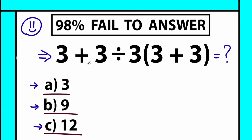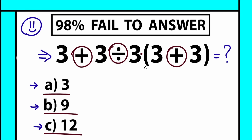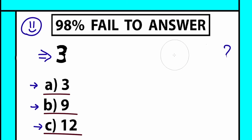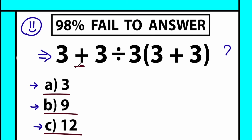Let's look closely at our question. We have all threes — we have addition, we have division, we have multiplication, and we have parentheses. What makes all the difference in the world is the order we do this problem. Do we do addition first? Do we do division first? Or do we do parentheses first? Because it makes all the difference in the world. What is the correct order for this question?